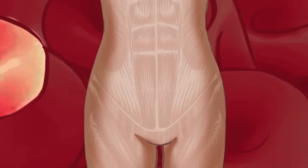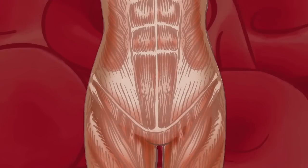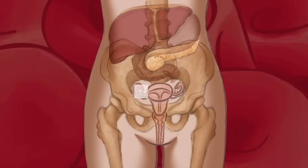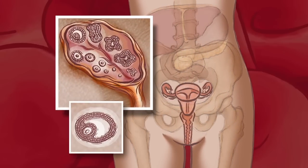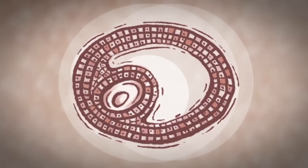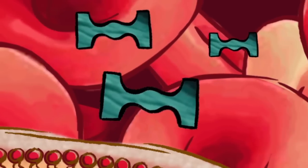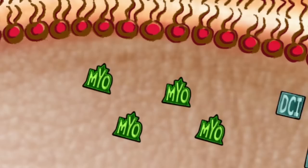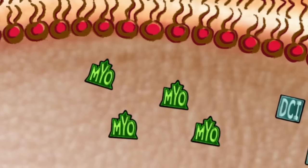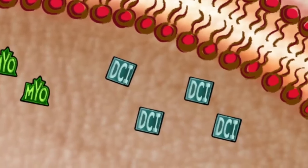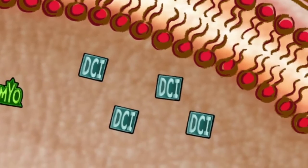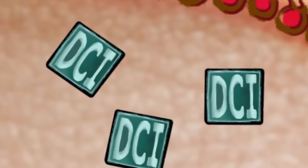The cells we're concerned with are the muscle and fat cells throughout the body and the theca cells of the ovaries, which produce testosterone. The small molecules are glucose, insulin, myoinositol, and d-chiroinositol, which is in short supply in PCOS due to diminished conversion from myoinositol.